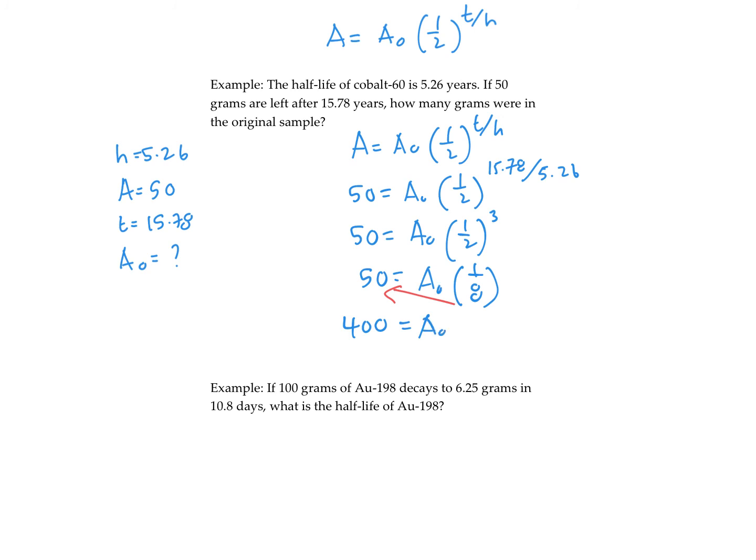So the initial amount was 400 grams. And it reduced in half three times. And that makes sense. Because 400 divided once is 200. Divided twice is 100. Divided three times is 50, which was the final amount. So that checks.